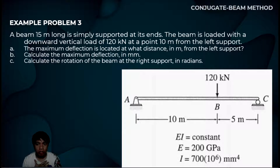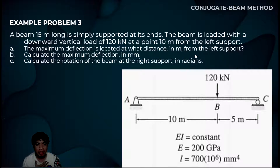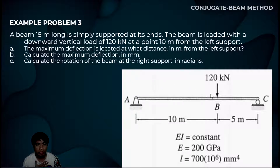Hello guys. So now we will solve example problem number 3 using the conjugate beam method. According to the problem, a beam 15 meters long is simply supported at its ends. The beam is loaded with a downward vertical load of 120 kilonewtons at a point 10 meters from the left support. The questions are: Letter A, the maximum deflection is located at what distance in meters from the left support? Letter B, calculate the maximum deflection in millimeters. Letter C, calculate the rotation of the beam at the right support in radians.